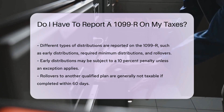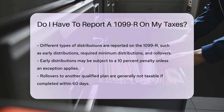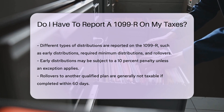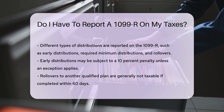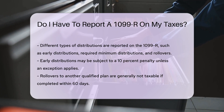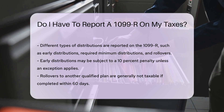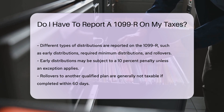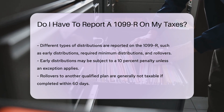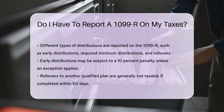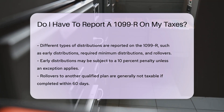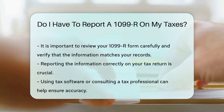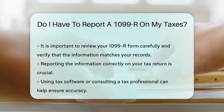Different types of distributions are reported on the 1099-R, including early distributions, required minimum distributions, and rollovers. Each type has specific tax implications. For example, early distributions may be subject to a 10% penalty unless an exception applies. Rollovers to another qualified plan are generally not taxable if completed within 60 days.